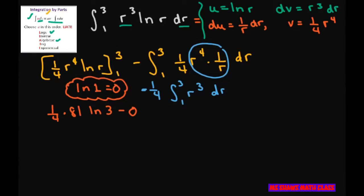Now let's evaluate this part. This is just going to be minus one-fourth, and since we have R cubed, that's just going to be one-fourth R to the fourth again, evaluated from 1 to 3.